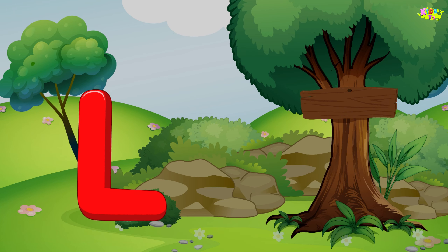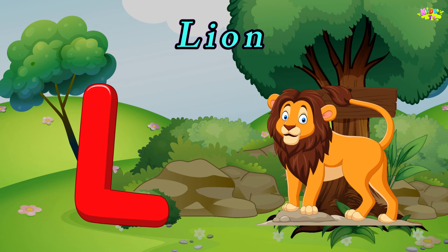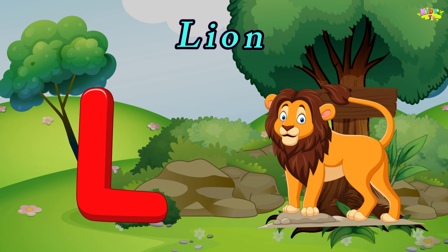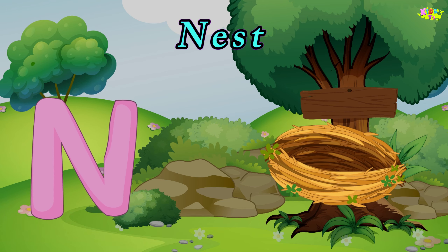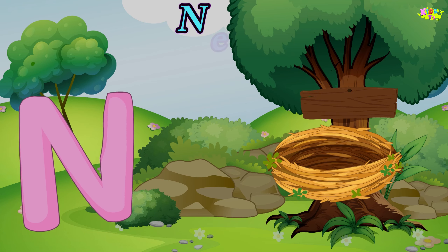L is for lion. L, L, lion. L, lion. M is for monkey. M, monkey. M, monkey. N is for nest. N, N, nest. N, nest. N, nest.